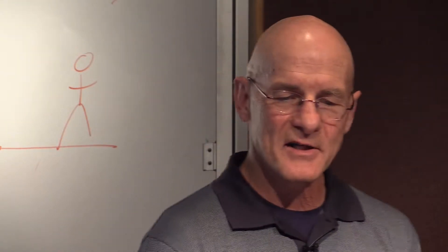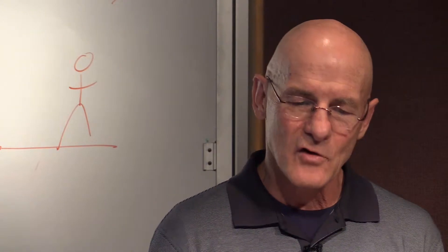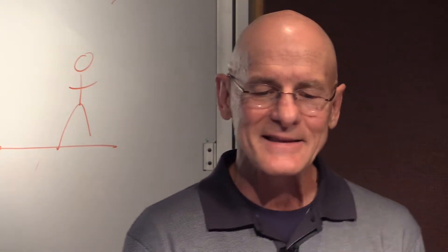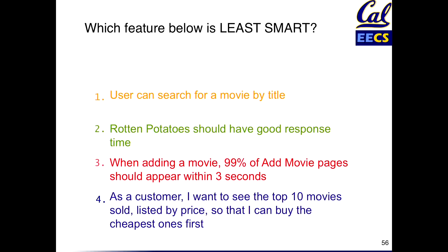Let's try another cards-again exercise. Which of these user stories is least SMART? User can search a movie by title. Rotten Tomatoes should have good response time when adding a movie. 99% of the movie pages should appear within three seconds. And as a customer, I want to see the top ten movies sold listed by price so that I can buy the cheapest one first.